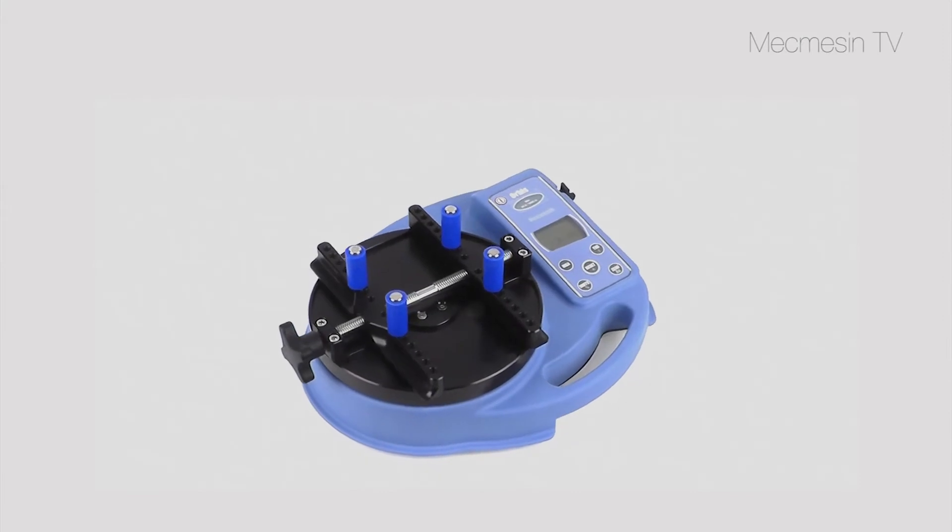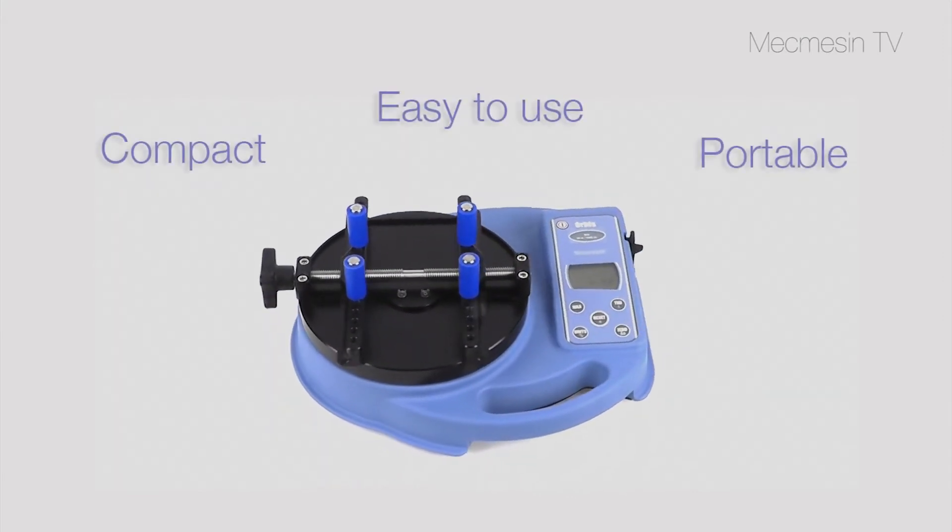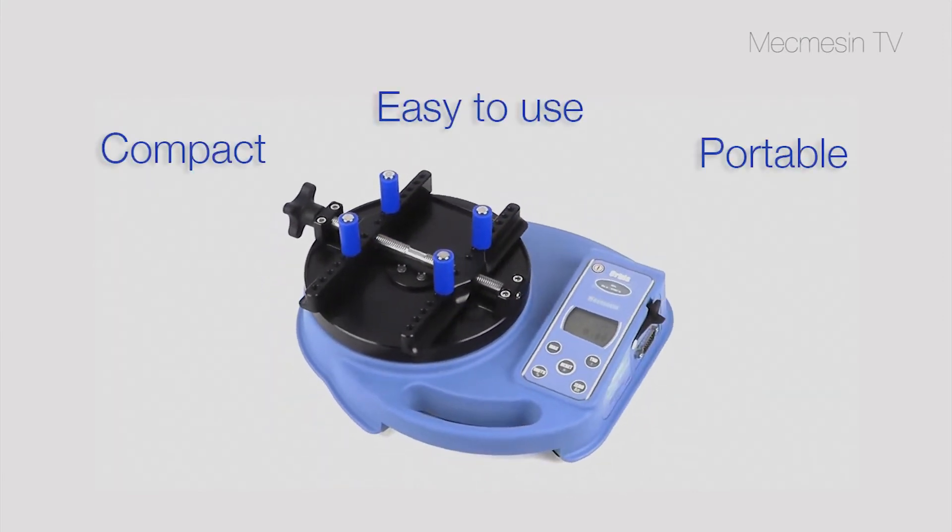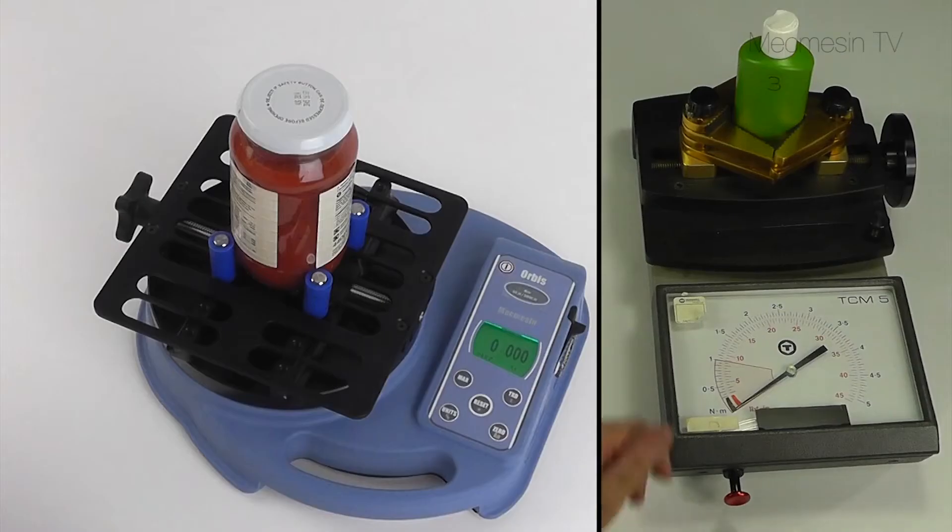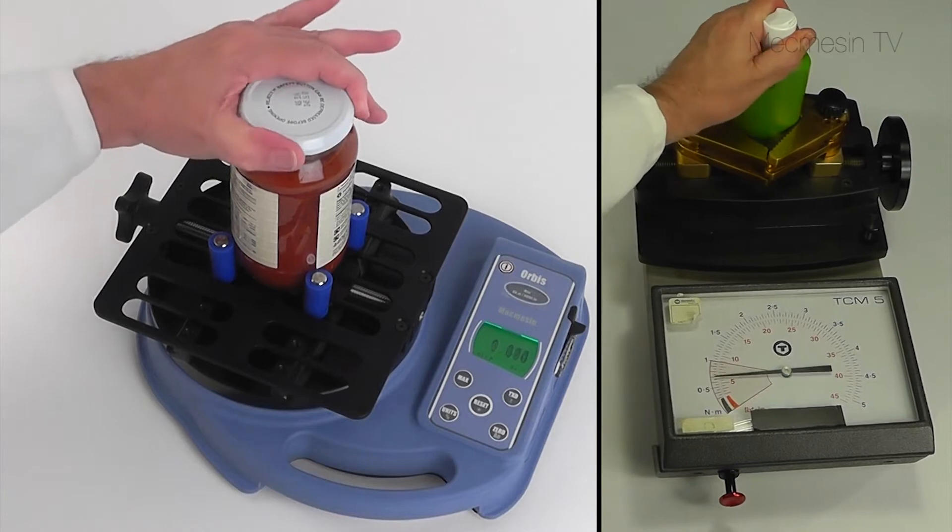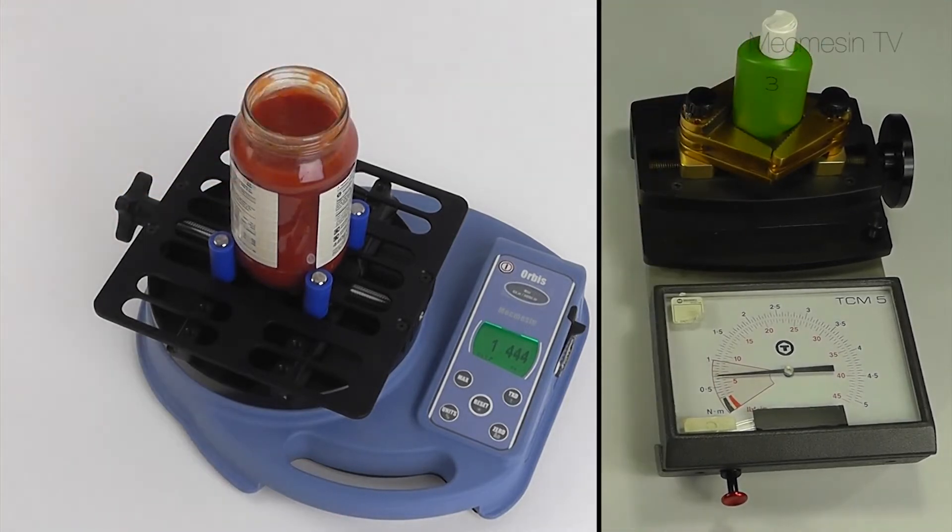The Orbis is a compact, portable torque tester, ideally suited for testing a wide range of closures and many other applications where accurate measurements are required. It provides a far greater level of accuracy compared to other forms of torque measurement.